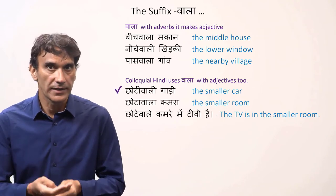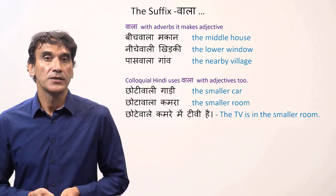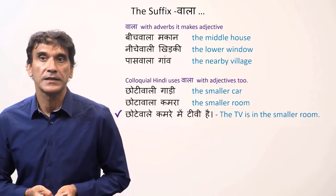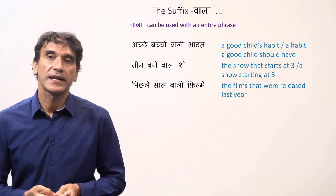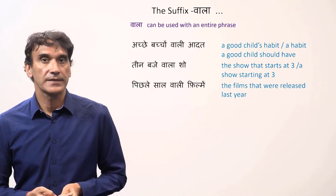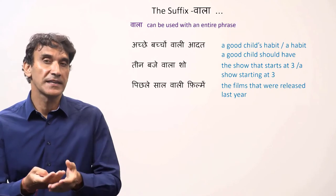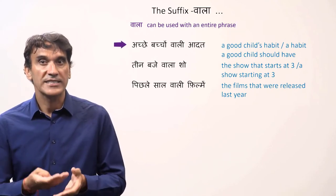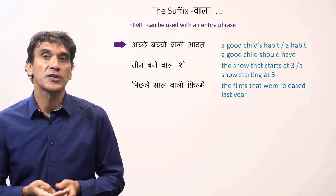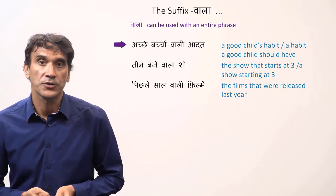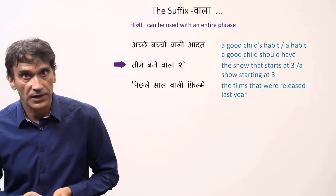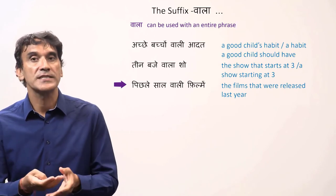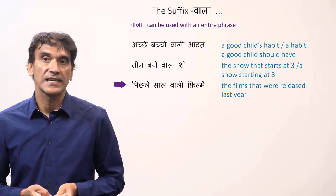Here are some examples with adjectives: chhoti wali gaadi — the smaller car; chhota wala kamra — the smaller room; chhote wale kamre mein TV hai — the TV is in the smaller room. The suffix wala can also be used with an entire phrase, in which case it is written separately as an independent word. For example: teen baje wala show — the show that starts at three; pichle sal wali filme — the films that were released last year.